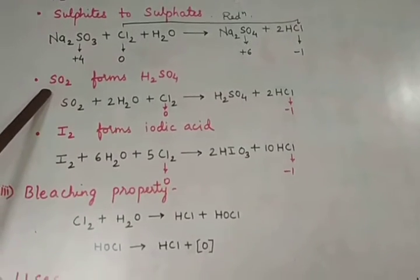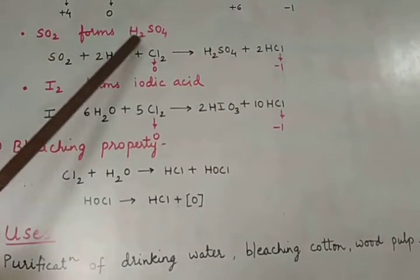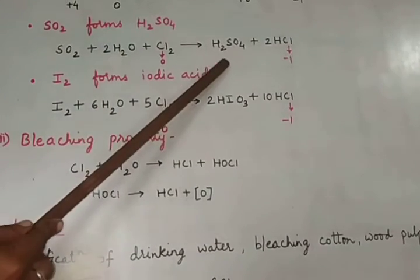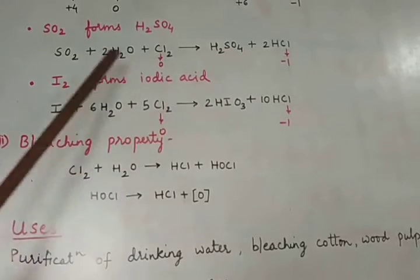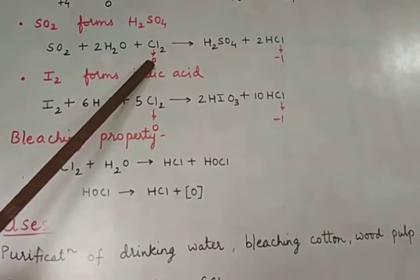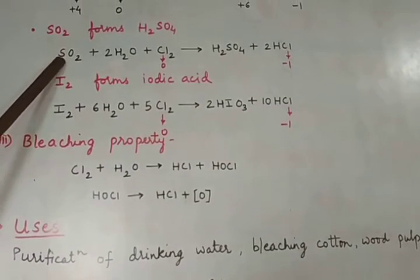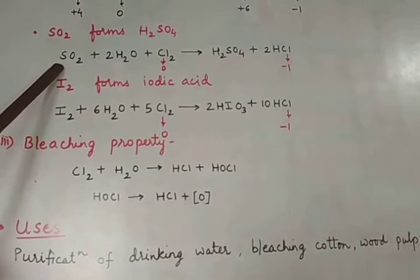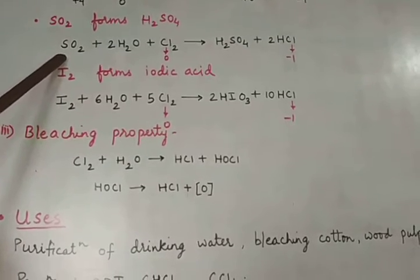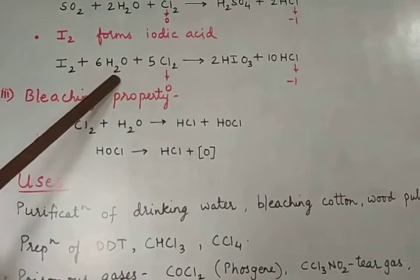In the next reaction, SO2 in the presence of water and chlorine forms sulfuric acid (H2SO4). It is your homework to calculate the oxidation state of sulfur here. Chlorine is again undergoing reduction from zero to minus one, and you will find oxidation taking place in sulfur. Calculate the oxidation state of sulfur to confirm.